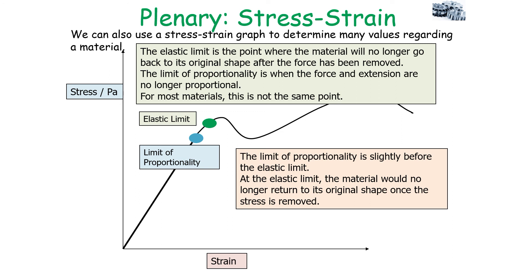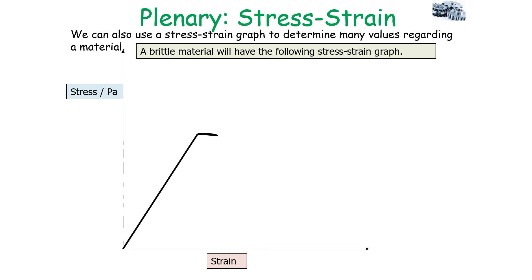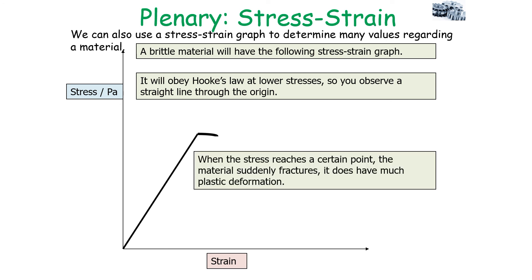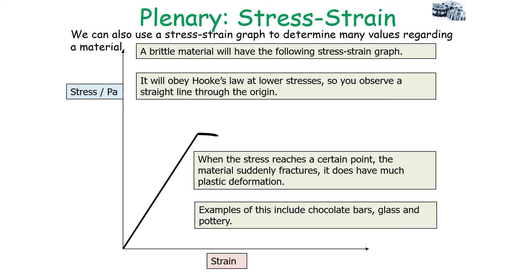Brittle materials show a different stress-strain graph. They obey Hooke's law at lower stresses, shown by a straight line through the origin, but when stress suddenly reaches a certain point, the material fractures without much plastic deformation — lots of elastic deformation but no plastic deformation. Examples of brittle materials include chocolate bars, glass, and pottery, because they don't stretch before they break; they simply snap and fracture.